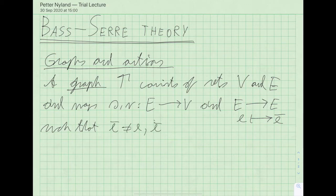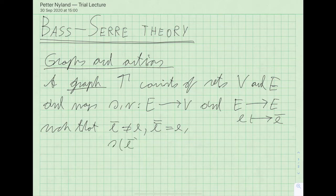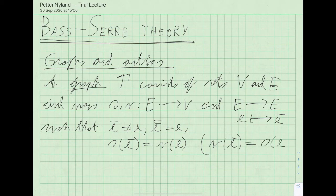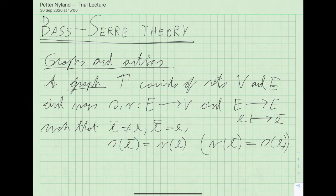This is an actual inversion: if you apply it twice, you get the same edge back. The inverse edge goes in the opposite direction, so the source of E-bar equals the range of E, and the range of E-bar equals the source of E. So if you start with an undirected graph, you take each edge and split it into two directed edges — one edge and its inverse — going in opposite directions. This is how Serre defines his graphs.